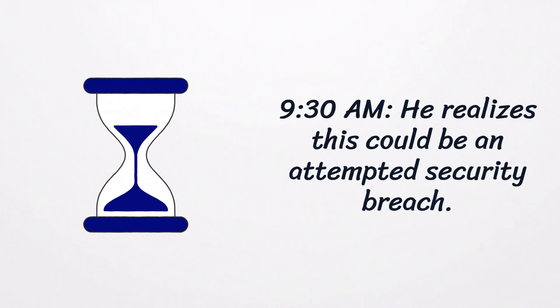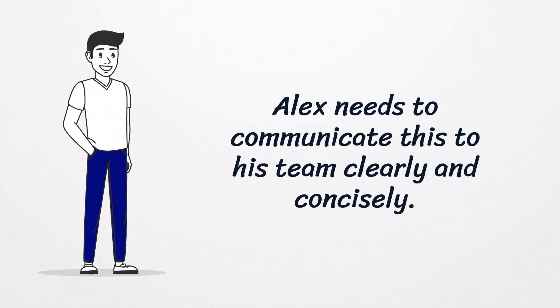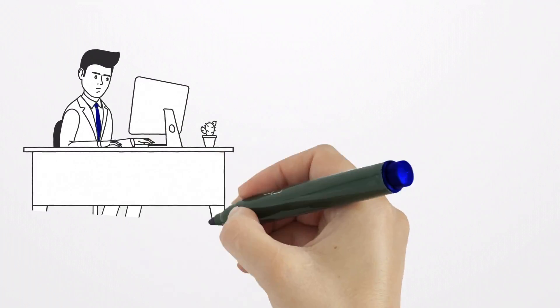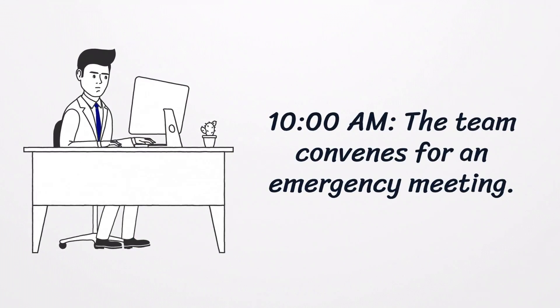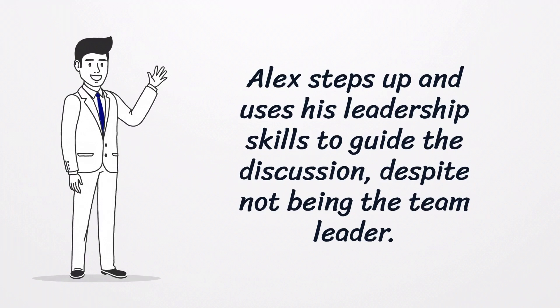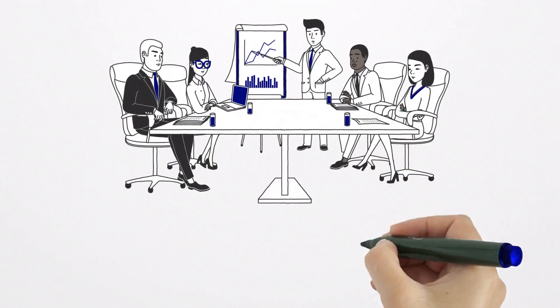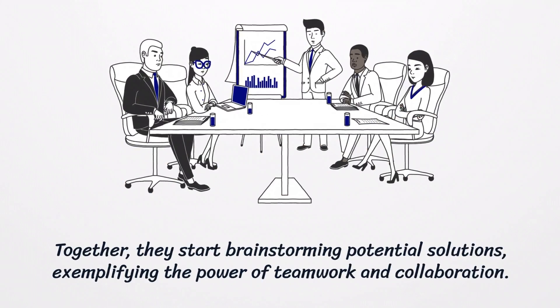9:30 AM - He realizes this could be an attempted security breach. Alex needs to communicate this to his team clearly and concisely. 10:00 AM - The team convenes for an emergency meeting. Alex steps up and uses his leadership skills to guide the discussion despite not being the team leader. Together, they start brainstorming potential solutions, exemplifying the power of teamwork and collaboration.